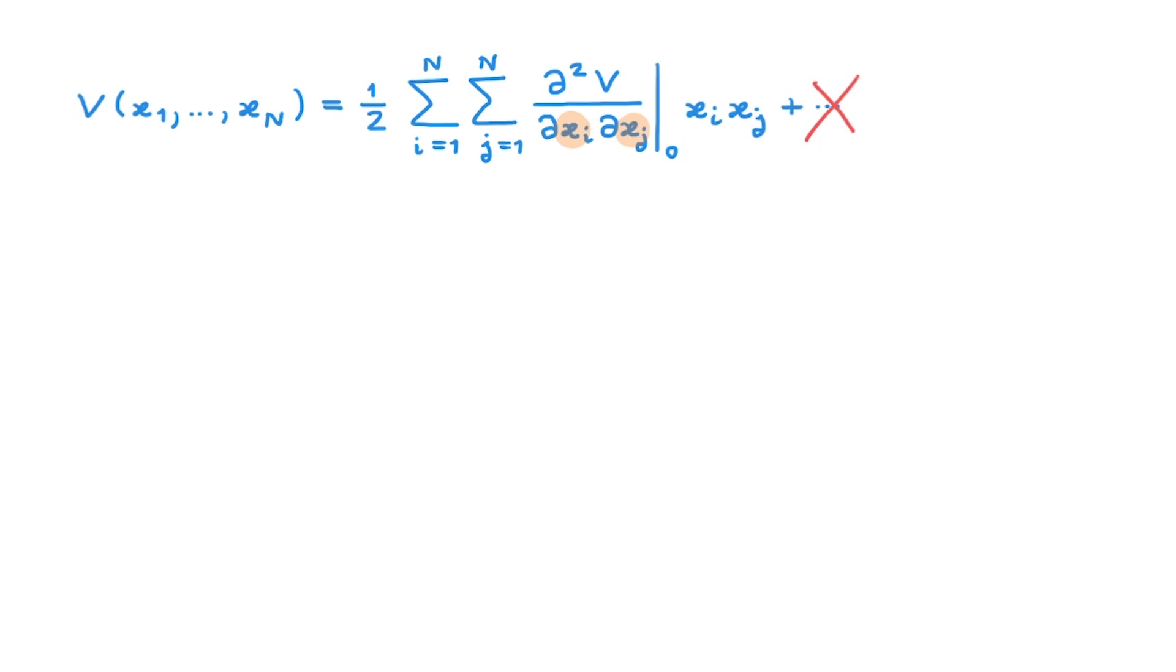However, it turns out that for Hamiltonians with quadratic potentials it is always possible to make a change of coordinates from the original x to a new set u. And in this new set of coordinates, the potential becomes decoupled like this. As a result, the total Hamiltonian can be described as N individual one-dimensional harmonic oscillators.